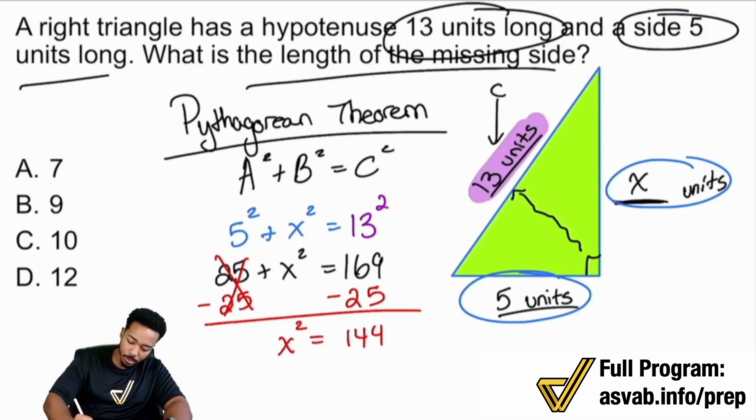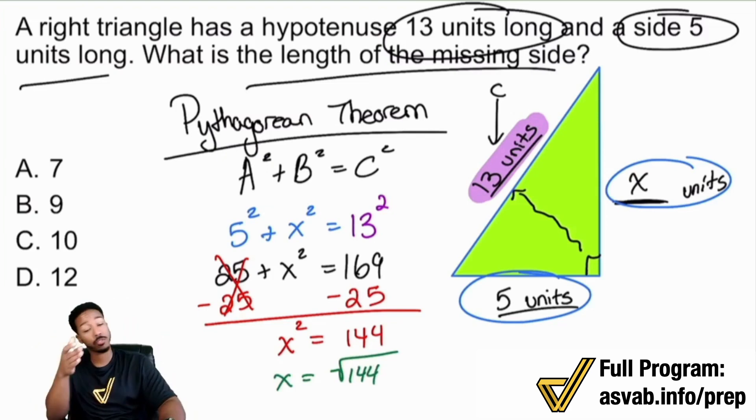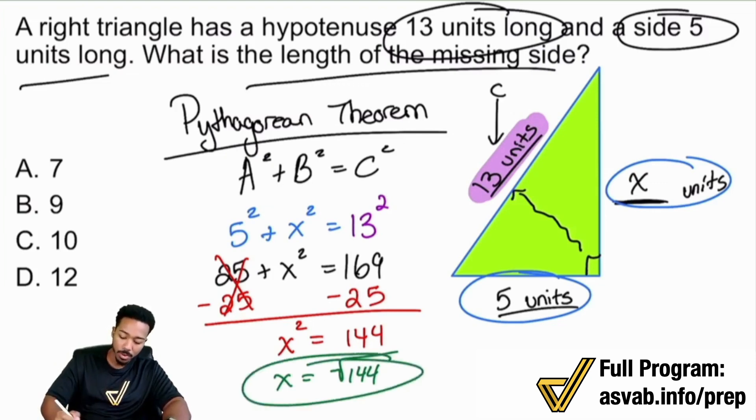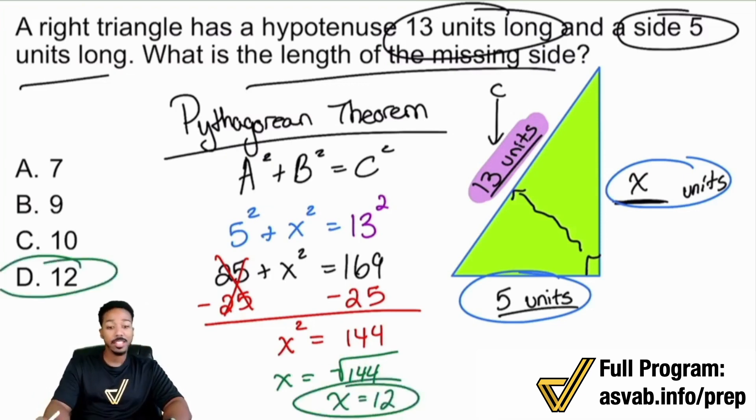What squared gives you 144? 12. 12 all day. Because you're taking the square root here. x equals the square root of 144. That is the opposite of squaring. Squaring, square rooting, opposites. Just like multiplication and division, addition, subtraction, squaring, square rooting. They are opposites of each other. And that's how we will go ahead and figure out what x is. x equals 12. And that is answer choice D right there.